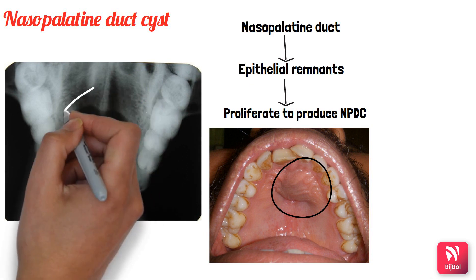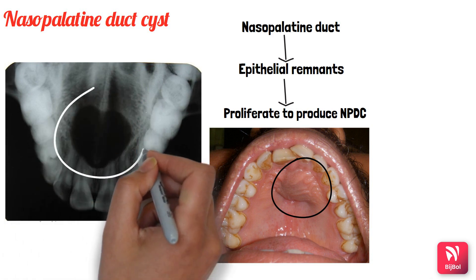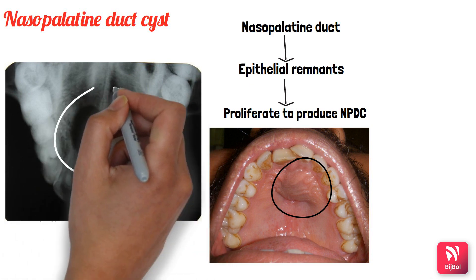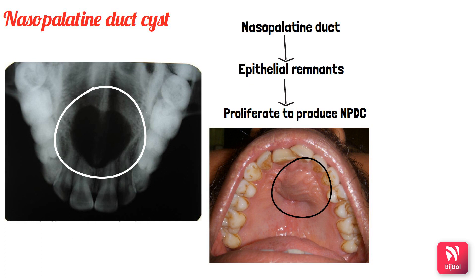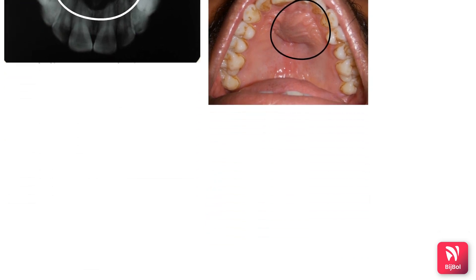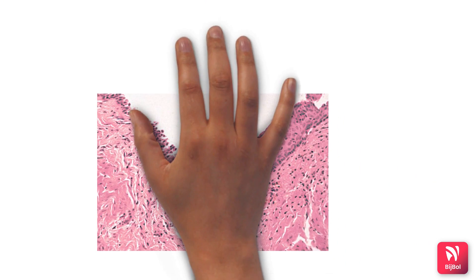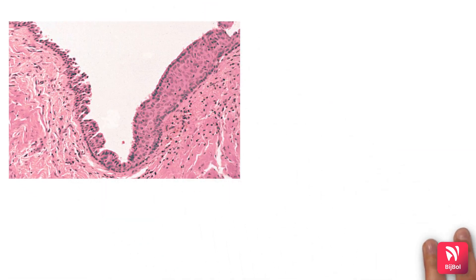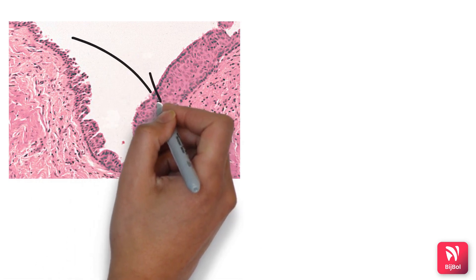Radiographically, there is a well-circumscribed radiolucency in or near the midline of the anterior maxilla between the central incisors. It usually shows a classical heart-shaped radiolucency, as seen in this picture. Sometimes it can be round or oval also.